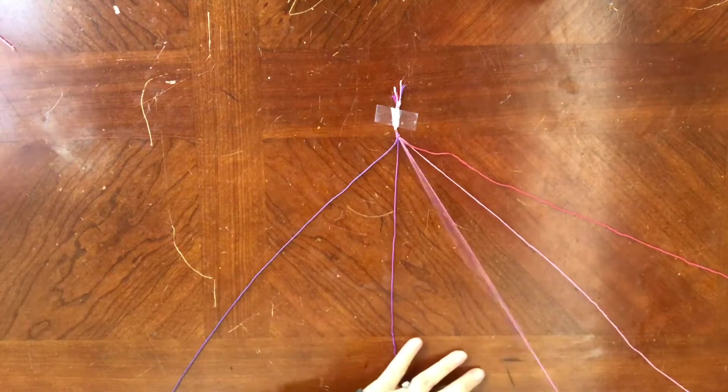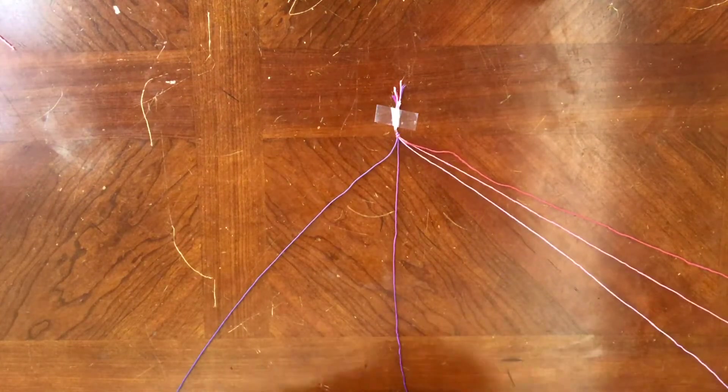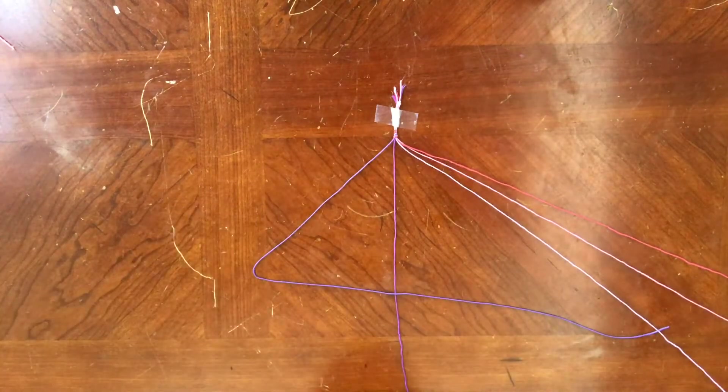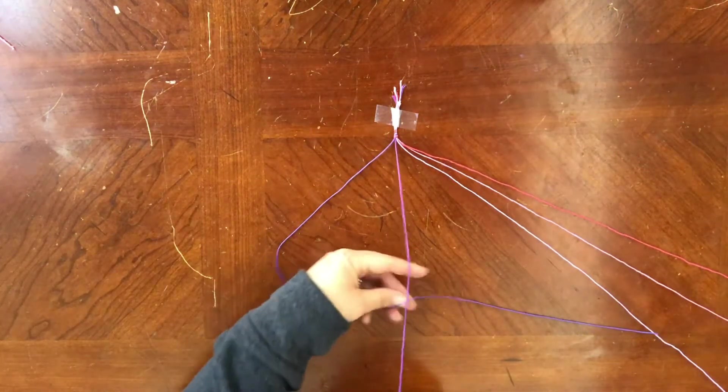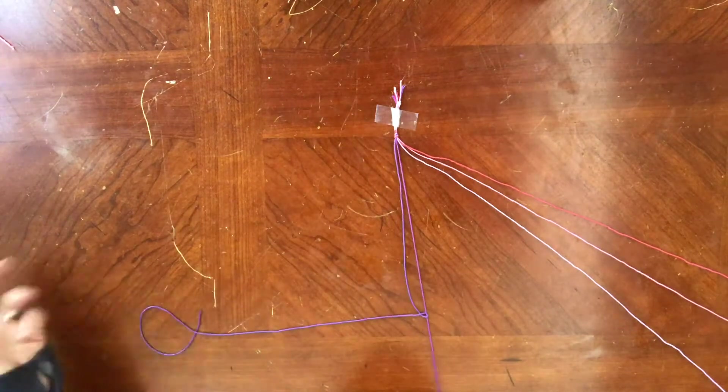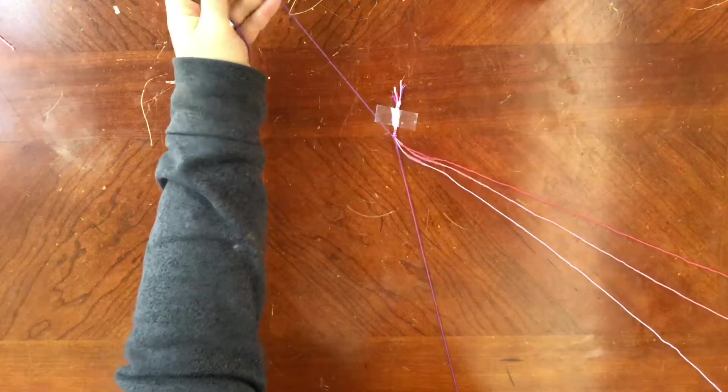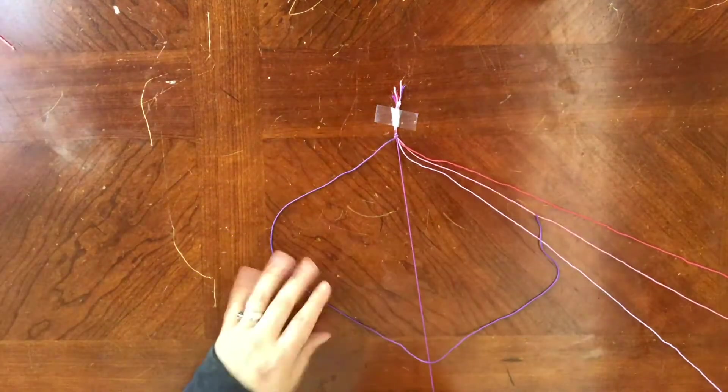Now that you have all of your strings in order, we can begin. The first step is to take the first two strings and make the number four. Then pull the side of the four through the middle and make a very simple knot. This is your process for everything. For each string, we are going to do this two times.